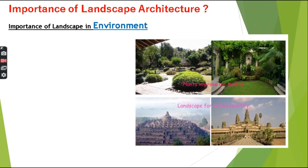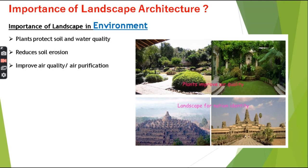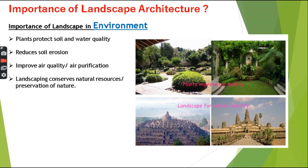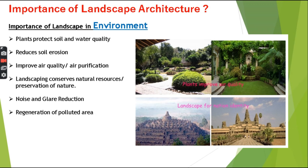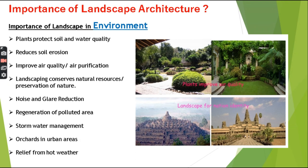Importance of landscape on an environmental basis includes: plants protect soil and water quality — proper landscaping reduces nitrate leaching from soil into water supply, thus protecting soil and water from being contaminated. It also helps to reduce soil erosion and improves air quality and air purification. Landscaping conserves natural resources and contributes to preservation of nature — by using trees to modify temperature and protect against wind, the amount of fossil fuels used for cooling and heating can be reduced. Landscape architecture also helps to reduce noise and glare, helps in regeneration of polluted areas, stormwater management, and provides outdoor relief from hot weather in urban areas.